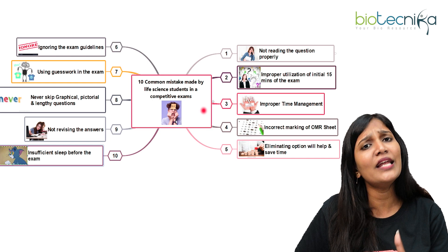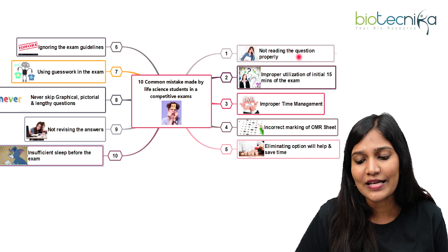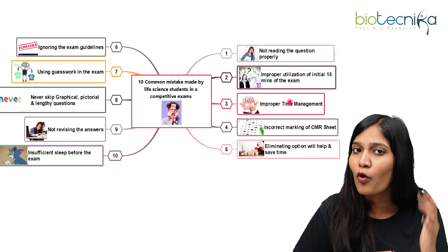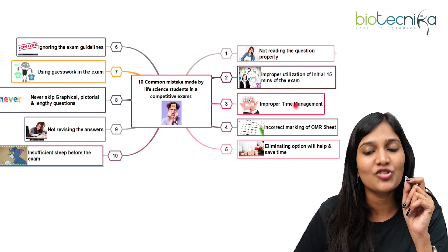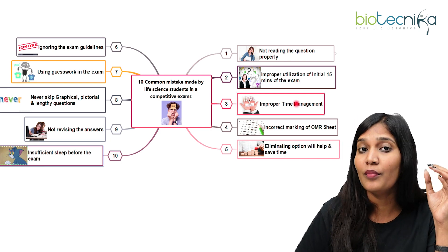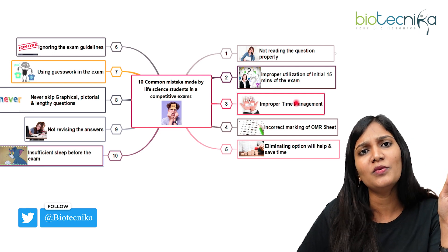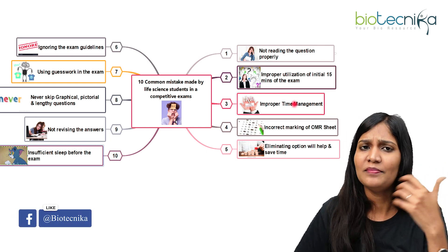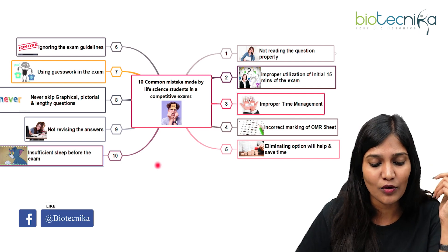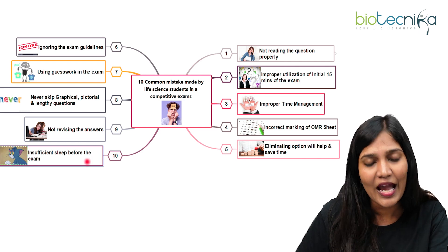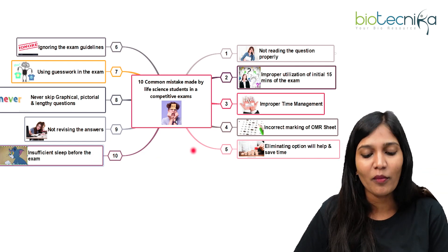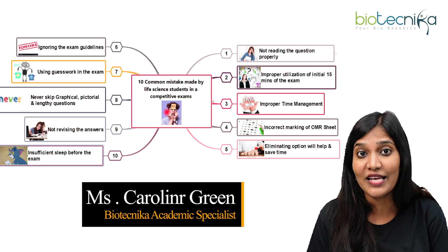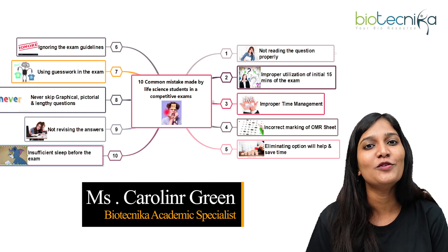Today we've talked about the 10 common mistakes that most life science students make in competitive examinations: always read questions carefully, look for key terminologies, utilize the first 15 minutes, manage your time properly, mark the OMR sheet correctly, eliminate options, never ignore exam guidelines, avoid guesswork if unsure, don't skip lengthy or graphical questions as they're often easy, always revise answers in the last few minutes, and always have a good sleep before the examination. What major mistake have you made when writing an exam that caused a greater tragedy? Put it in the comment section. I'll meet you back again with another video. Thank you.